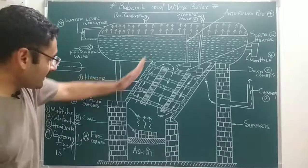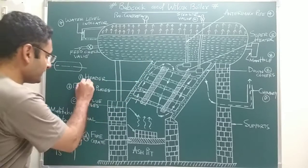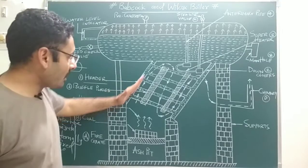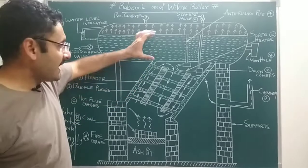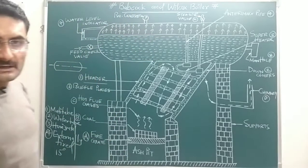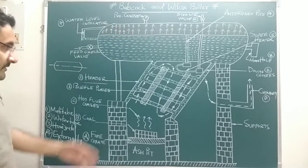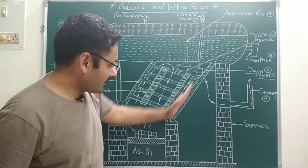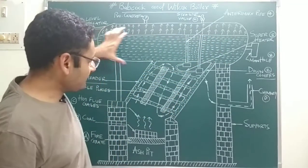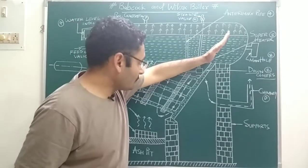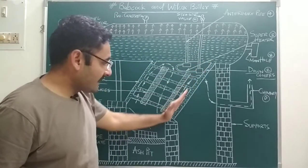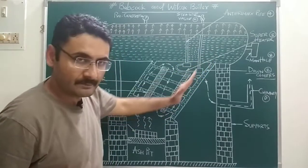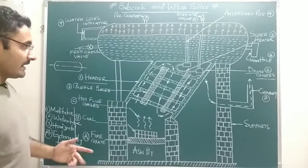Now, the important parts. The first part is the header — a tube through which hot water moves upward and enters the boiler shell, converting into steam. The next important part is the downcomer — an inclined tube through which cold water present inside the boiler shell moves in the downward direction. With the header, hot water moves up; with the downcomers, cold water moves down.